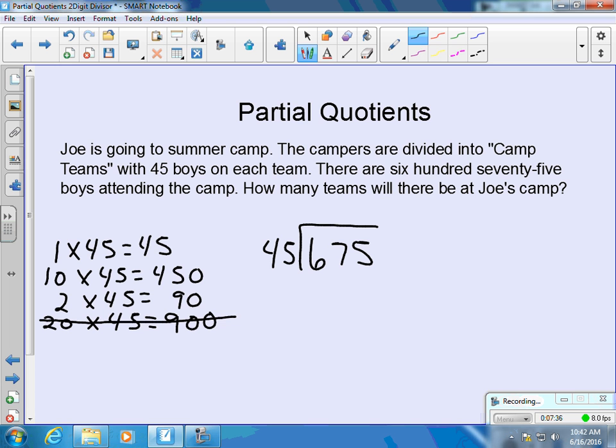So now we go to 5. 5 groups of 45. And we know that's going to be half of what 10 groups of 45 was. So that's going to be 225. And then we know we don't need to use the 50 groups of 45 because 20 was too large. So now we have problems that we can use to help us find out how many teams there will be at Joe's camp.